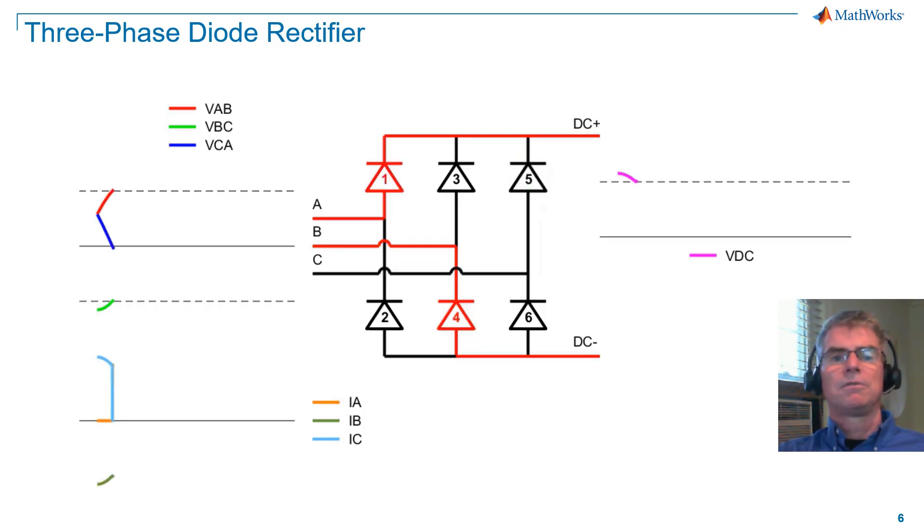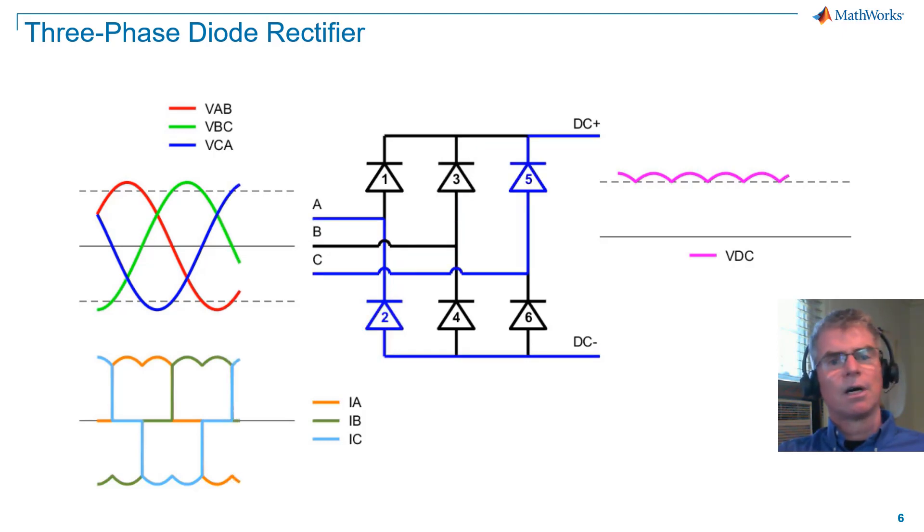Our final observation on the six-pulse rectifier is the effect it has on the AC current. On the bottom left, you can see that line current is not a sinusoid. The commutation has caused the line current to be contaminated with harmonics. That is, frequency components that are higher than the supply frequency. We'll cover harmonic analysis in a future tutorial.